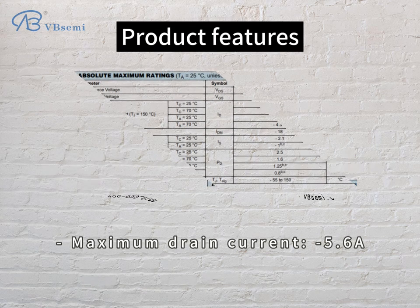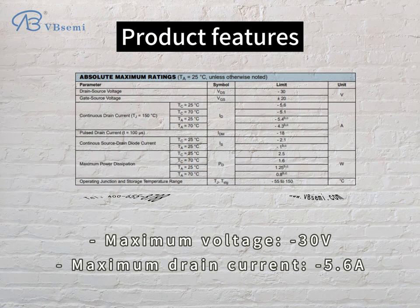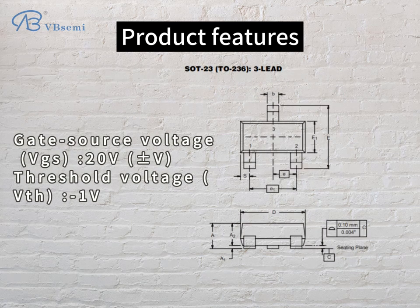Product features: Maximum voltage -30V. Maximum drain current 5.6A. Gate-source voltage VGS: 20V. Threshold voltage VTH: -1V.